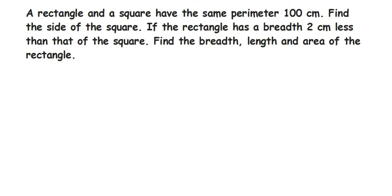Here's a question on rectangle and square. A rectangle and a square have the same perimeter of 100 centimeters. Find the side of the square if the rectangle has a breadth two centimeters less than that of the square. Find the breadth, length, and area of the rectangle. They are asking a lot in this question.